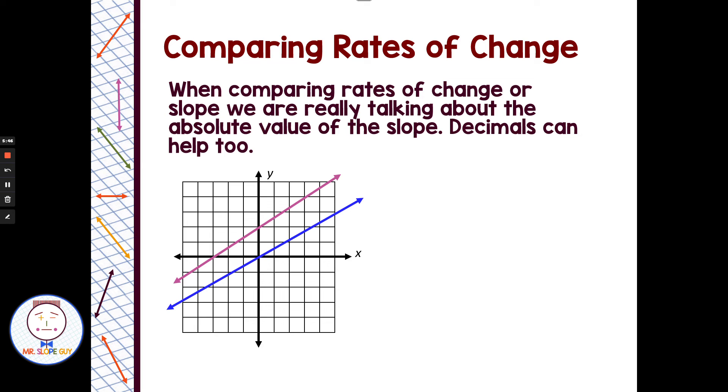So how do we compare rates of change? We've got to find the rate of change from whatever format we're looking at, and then we can make some comparisons. When comparing rates of change or slope, we're really talking about the absolute value of a slope. And decimals can be helpful. If we look at the blue line, we already found the slope on this line. We found the slope was 3 fifths.